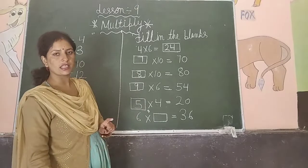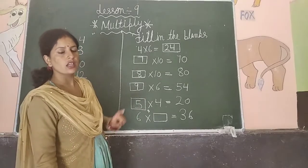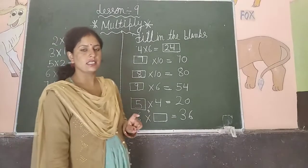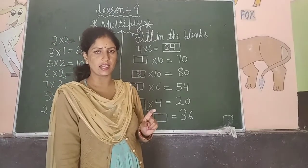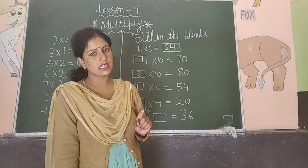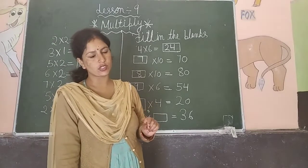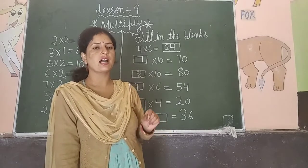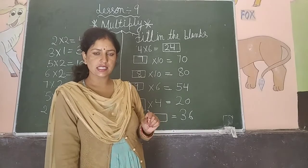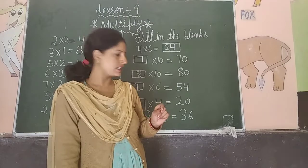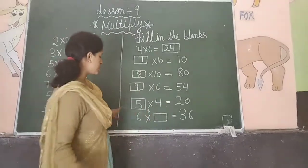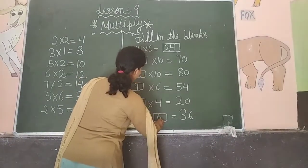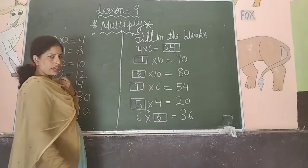So 4 fives are 20, meaning 5 multiplied by 4 equals 20. Next: 6 multiplied by blank equals 36. You need to say the table of 6 until you reach 36: 6 ones are 6, 6 twos are 12, 6 threes are 18, 6 fours are 24, 6 fives are 30, 6 sixes are 36. So here you will fill in 6.